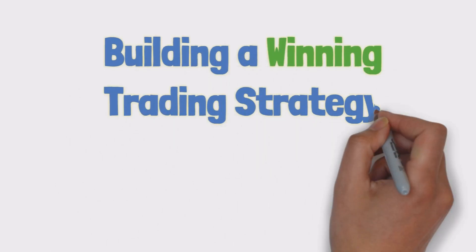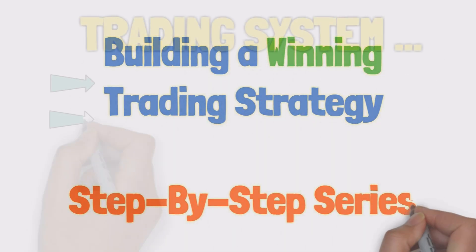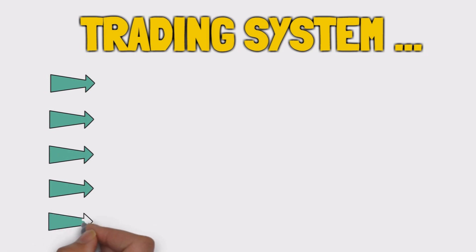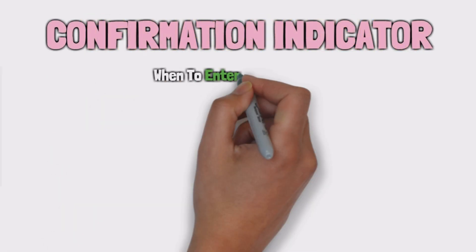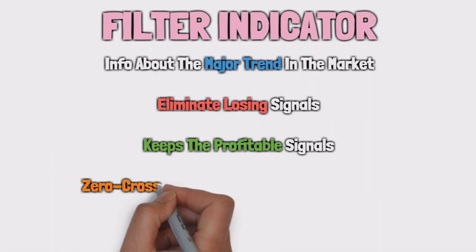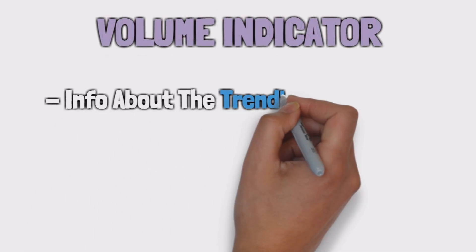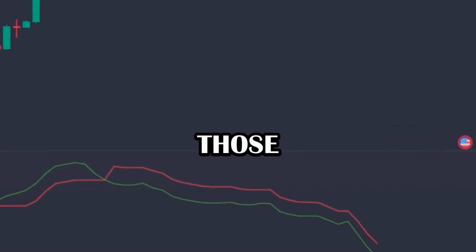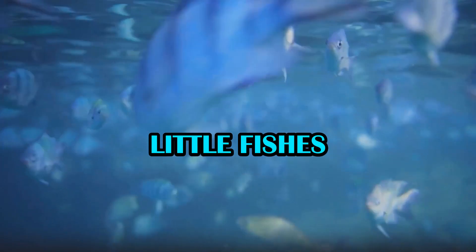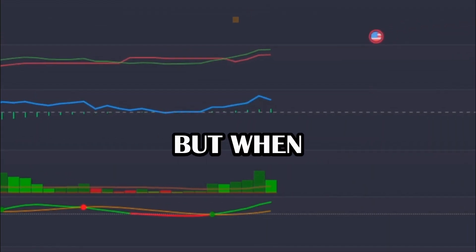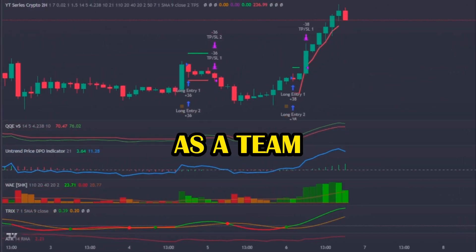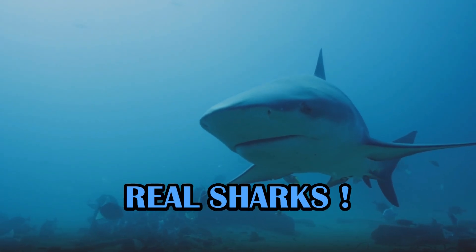In the last 4 episodes of this series, I've shown you the best way to create your dream trading strategy. In each episode, concepts related to different types of indicators were addressed — indicators that, when used individually, swim like little fishes, but when inserted in a system where they have to work as a team, they become real sharks.